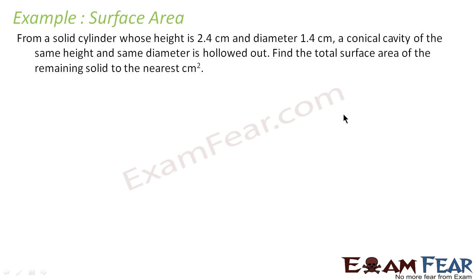The question says: from a solid cylinder whose height is 2.4 meters and diameter is 1.4 centimeters, a conical cavity of the same height and same diameter is carved out. We have to find the surface area of the remaining solid in meters squared.